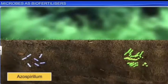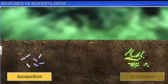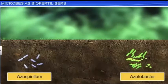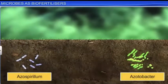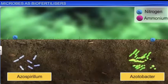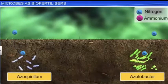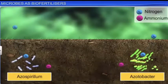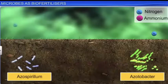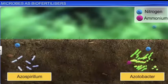Azospirillum and Azotobacter, on the other hand, are free-living nitrogen-fixing bacteria that live in soil and convert atmospheric nitrogen into easily absorbable forms, such as ammonia.